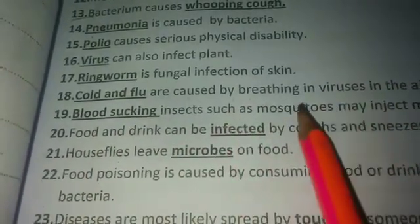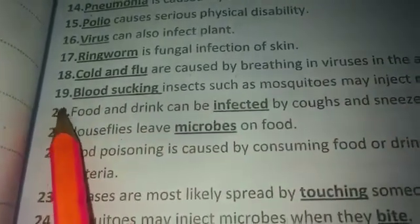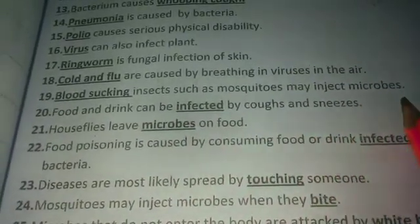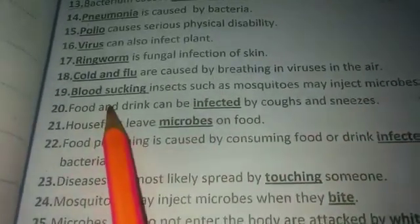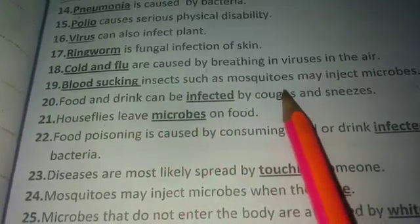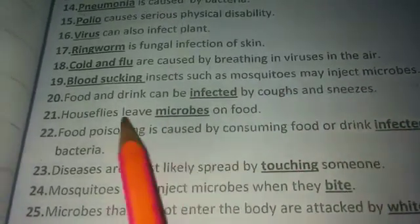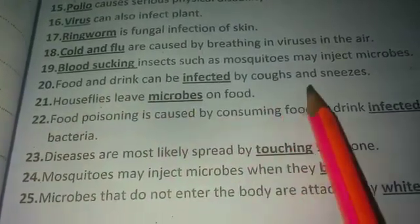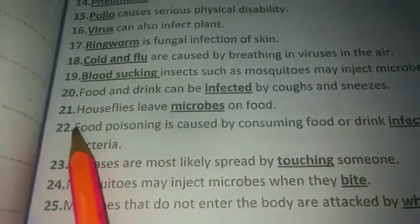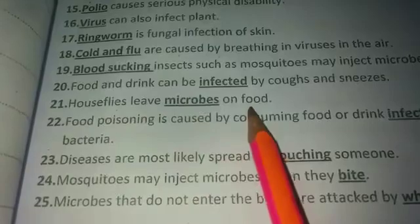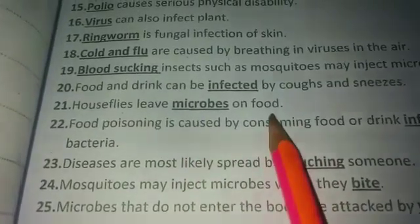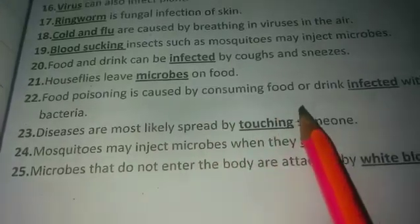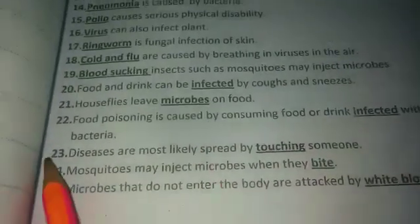Number eighteen: blood-sucking insects such as mosquitoes may inject microbes — مچھر جیسے blood sucking insects microbes کو inject کرتے ہیں. Number nineteen: food and drinks can be contaminated by coughing and sneezing. Number twenty: flies can leave microbes on foods. Number twenty-one: food poisoning is caused by consuming food or drink infected with bacteria.